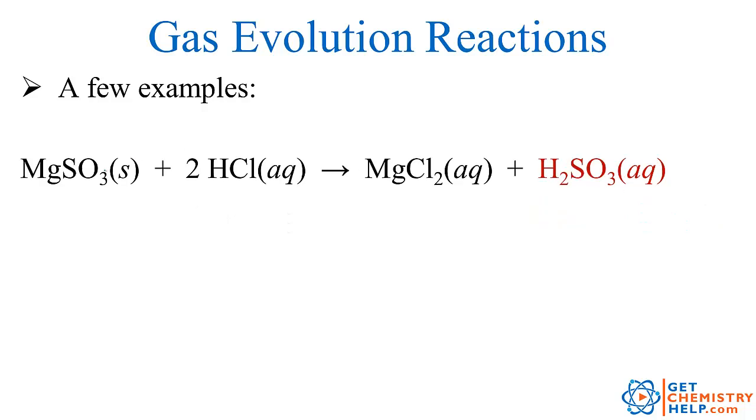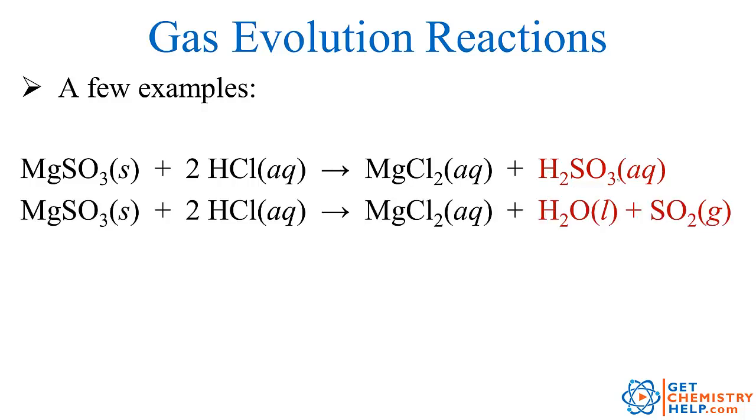Here's another example. Magnesium sulfite reacts with hydrochloric acid, so again we would normally swap the sulfite and the chloride to make magnesium chloride, our first product, and hydrogen with sulfite would make sulfurous acid. But again we just learned that if you see sulfurous acid, that's actually sulfur dioxide dissolved in water. So we would just remove that and replace it with this.